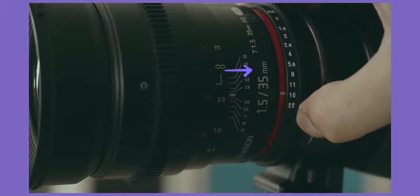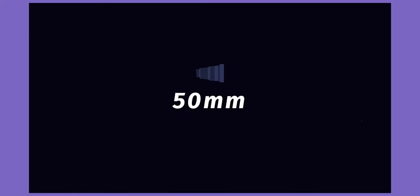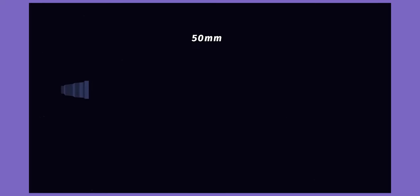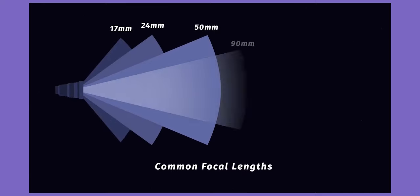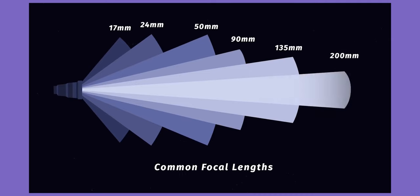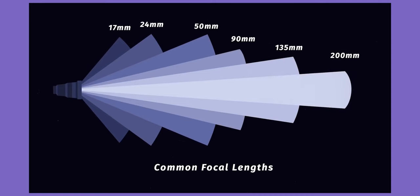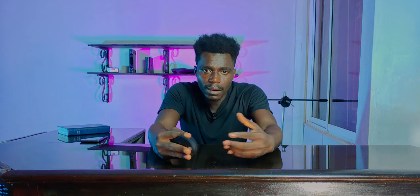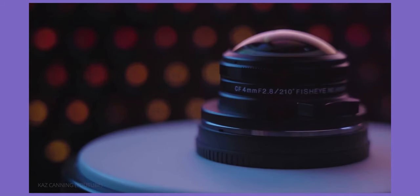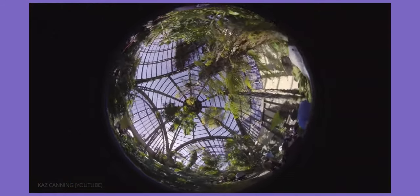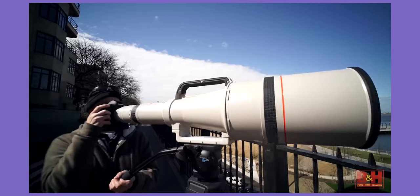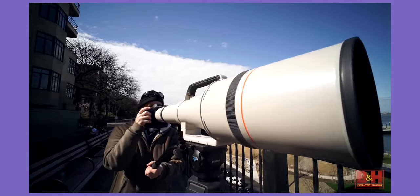A good example is a 50mm lens. Some focal lengths range from the wide 17mm lens to a narrow 200mm lens. However, some lenses have extremely short focal lengths such as a 4mm fisheye lens, or an extremely long focal length such as a 1,200mm telephoto lens.